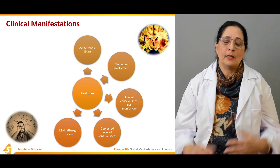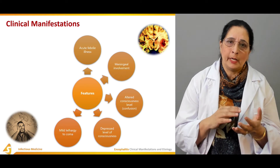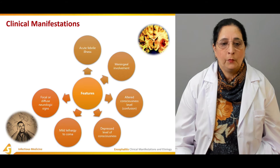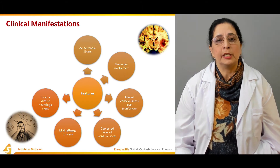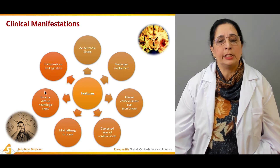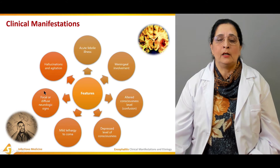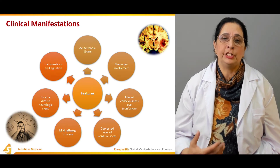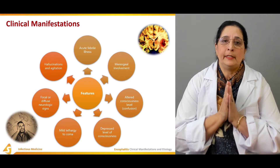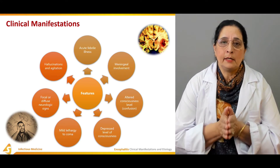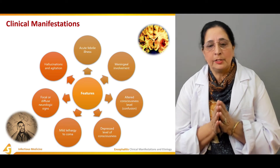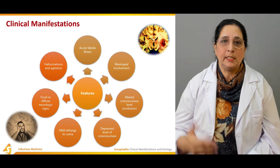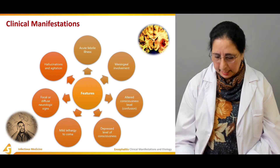The altered consciousness can range from mild lethargy to coma. The patient might have lethargy, no energy, listlessness, or they might go to complete coma or unconsciousness. There are also focal or diffuse neurologic signs. Hallucinations and agitation are present — the patient is not in their senses and sees things which are not real. All these — altered level of consciousness, lethargy, coma, meningeal involvement, and acute febrile illness — are manifestations of encephalitis.